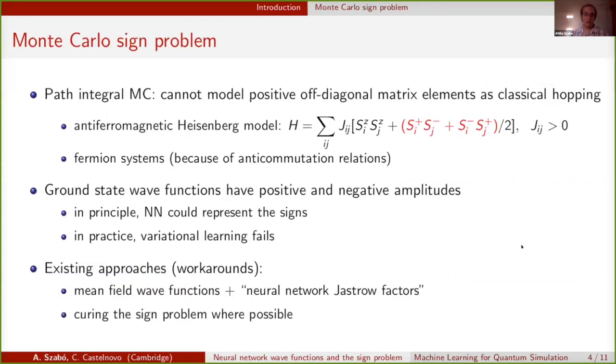The other half of the title, the Monte Carlo sign problem, is something that we usually associate with path integral Monte Carlo, where the idea is that we model imaginary time quantum dynamics as a classical stochastic process, but this only works if the Hamiltonian doesn't have any positive off-diagonal matrix elements. Standard quantum Monte Carlo suffers for systems such as antiferromagnets, where we can manifestly see these positive off-diagonal matrix elements, and also for fermionic systems, because it would have to predict the nodal structure, which turns out to be very complicated without any prior answers to this.